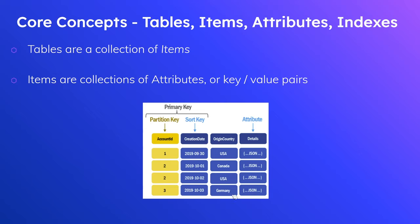If you don't want to do a full scan, you can use a global secondary index or GSI. I have a video on this in the description. It essentially makes it so that instead of querying only on the partition key and sort key, we can query on any other columns — in this case, origin country. We can say 'give me all items with origin country USA,' and the query will be very efficient because we have an index on it. So to recap: tables are a collection of items, items are horizontal records, key-value pairs are attributes, and indexes make it more efficient to access our data.